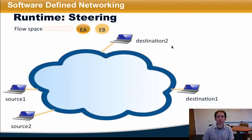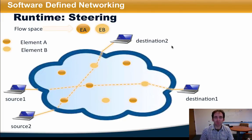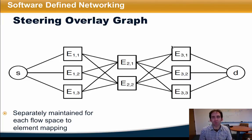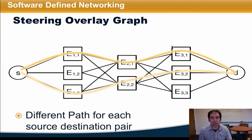The other aspect of the runtime for orchestrating network functions virtualization is steering. This is the process of routing traffic flows that belong to certain portions of flow space through sequences of functional elements that have been placed in the network. One way to do this is to represent each element instance as a node in an overlay graph. Elements in each tier of the graph represent a particular functional element, and multiple nodes in the same tier represent instances of the same element. The steering problem considers this overlay graph for each source-destination pair and computes a path for each flow that must traverse this sequence of elements to achieve the desired network objective.